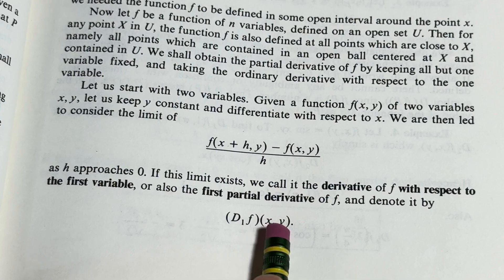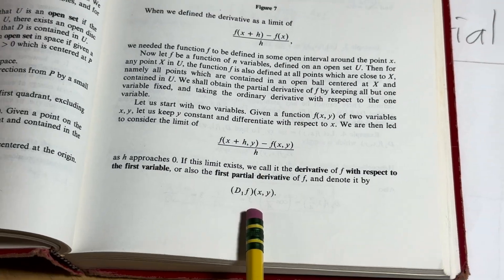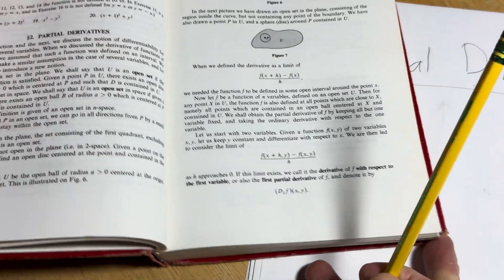And then notice the parentheses around the x, y. That's to emphasize that this is a new function, assuming the limit exists where it's defined.